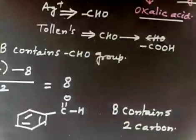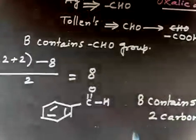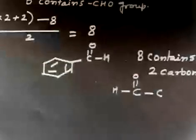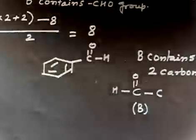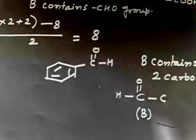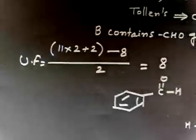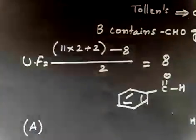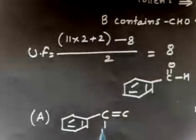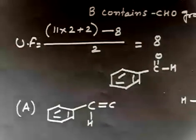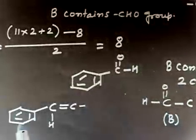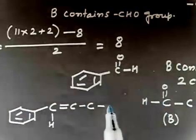So B must be a 2-carbon compound containing an aldehyde group. Now let us try to write the structure of A. I should have a benzene ring with a double bond attached — that way ozonolysis will give benzaldehyde. So far that accounts for 7 carbons, and I need 2 more carbons.